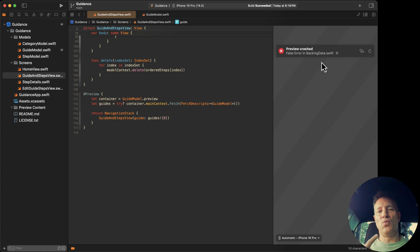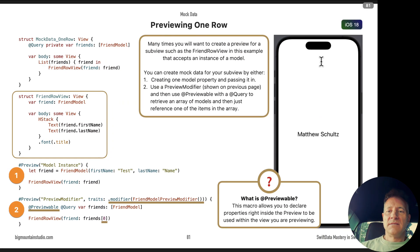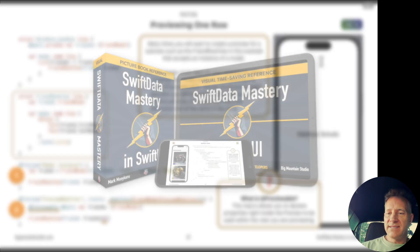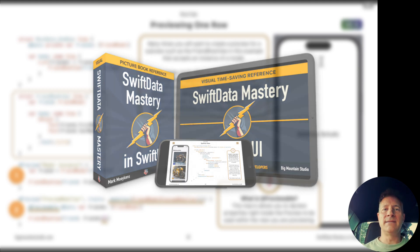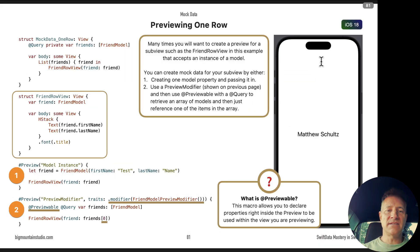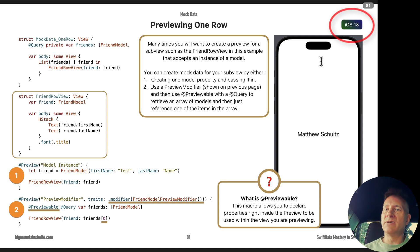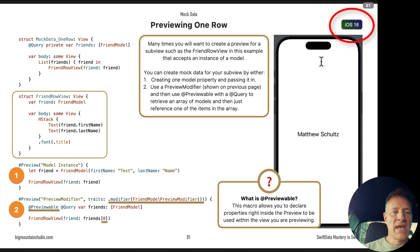So that's the problem. I updated my book — Swift Data Mastery in SwiftUI — and in the chapter called Mock Data I added a page called 'Previewing One Row.' As you can see from the tag in the corner, this is for iOS 18.